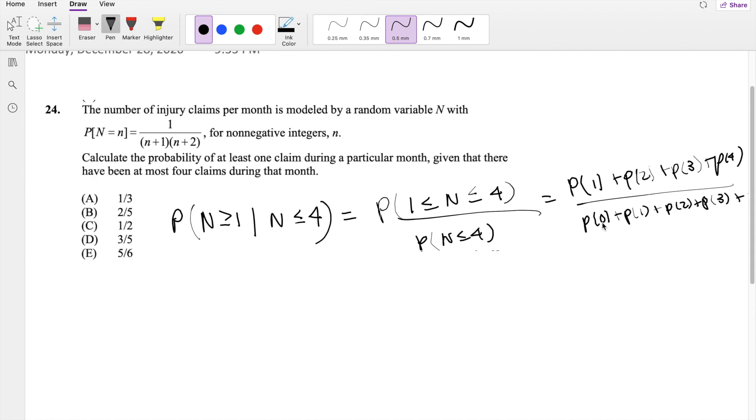And this is quite easy to find because if we're looking for, let's say, probability of 1, we just have to plug in 1 for our n value here.